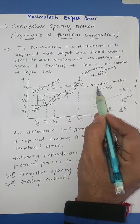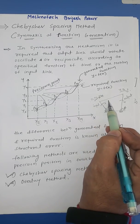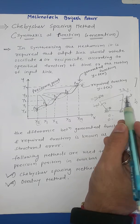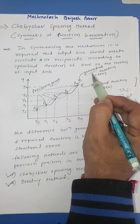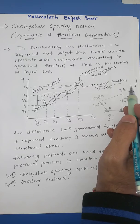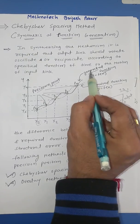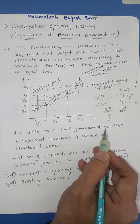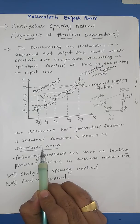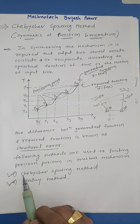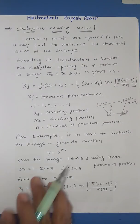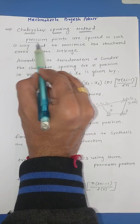In the Chebyshev spacing method there are a few precision points, one required function, and one generated function. If we consider point x1 y1 and point x2 y2, there is a difference — the generated function is the actual output, while the required function is what we need. The difference between the generated function and the required function is known as structural error. To remove this structural error we have two methods: Chebyshev spacing and the overlay method.